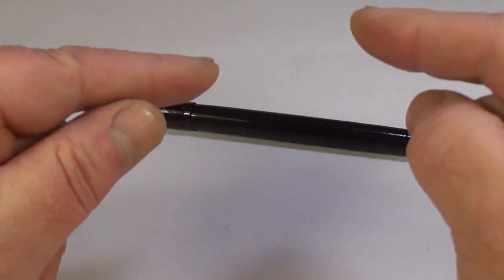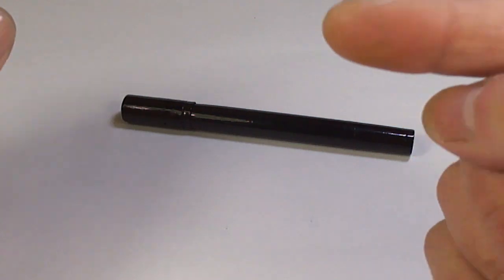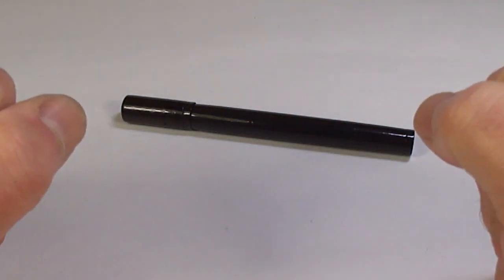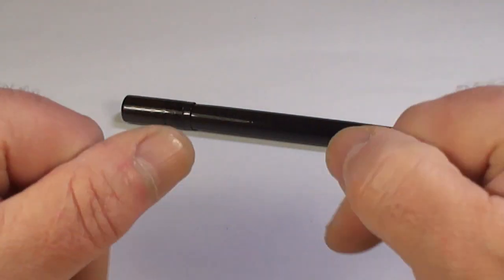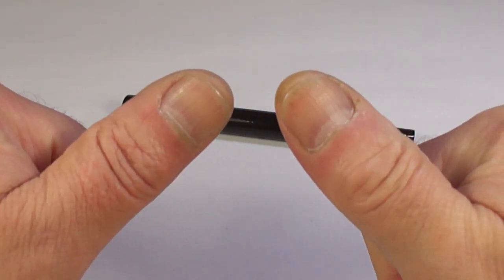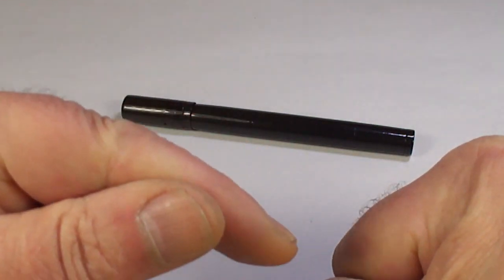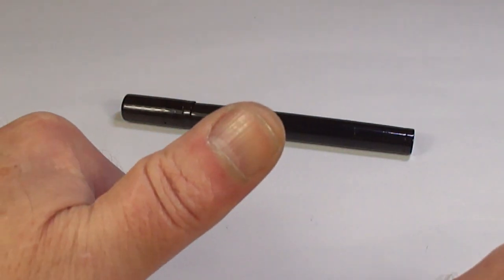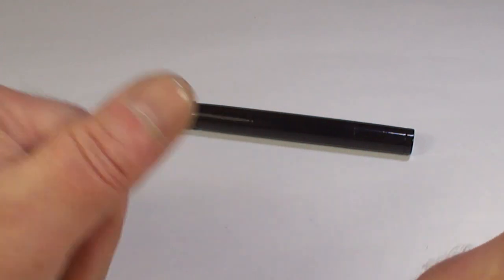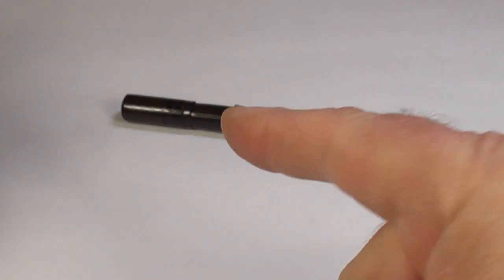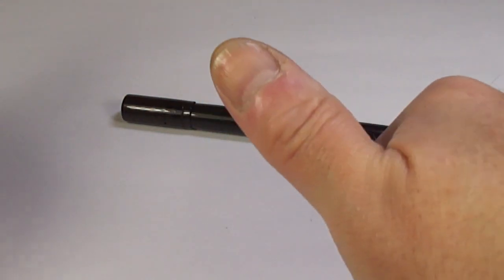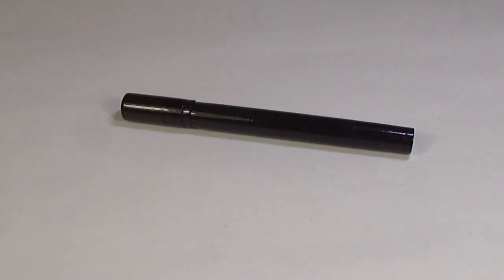So what we've got is a Waterman 45 safety pen, beautiful example, full working order as you can see. I hope you've enjoyed looking at the pen as much as I enjoy showing them to you people. Don't forget, don't be shy - leave a comment below, subscribe to my channel, give the video a thumbs up. And don't forget wherever you are around the world, please stay safe. But for now I'll just say bye bye.